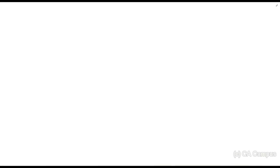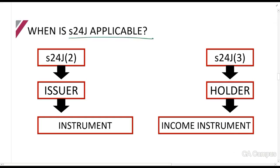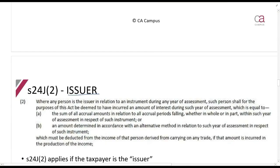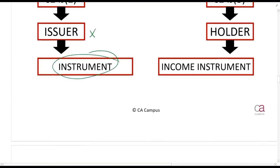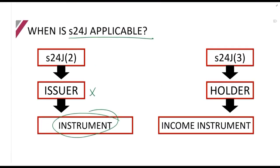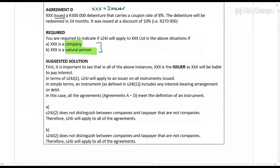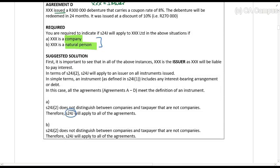Why is this important? Because if we look at when Section 24J is applicable — if we are the issuer, it must be an instrument. An instrument is any arrangement which has debt. It doesn't matter if you're a company or a natural person, and there's no period attached to it. When you're an issuer in relation to an instrument, there is no special rule around how long that should take. So in all of these situations — A, B, C, and D — Section 24J will apply.